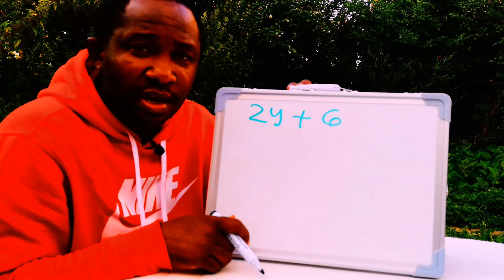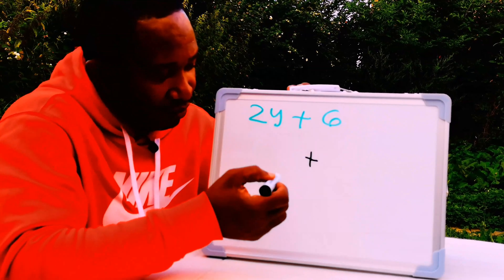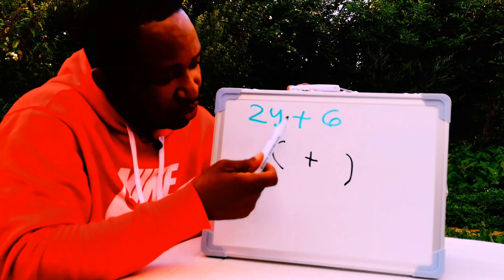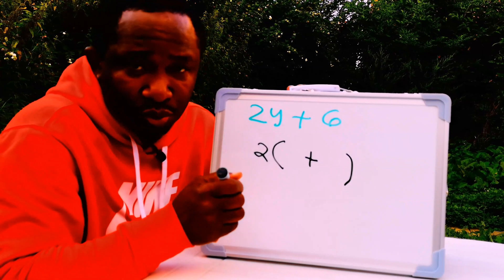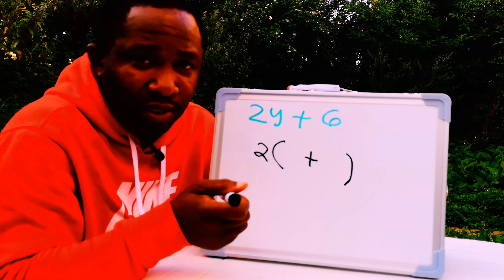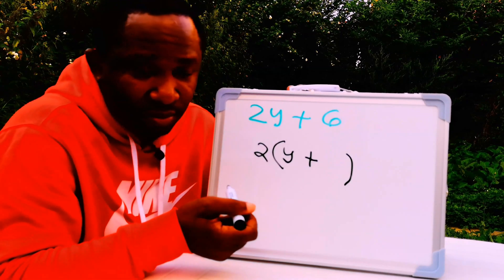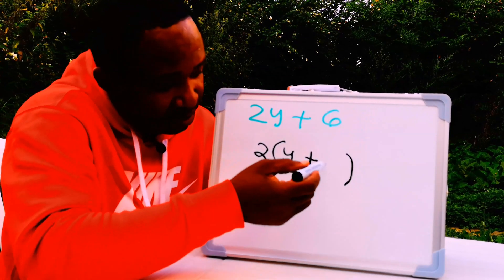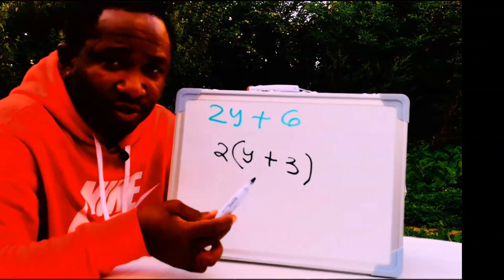Next, let's consider 2y plus 6. We are going to have a plus and open a bracket. What is common between both terms? The common factor is 2. 2 times y gives 2y, and 2 times 3 gives 6. So 2 is the common factor, giving us 2(y + 3).